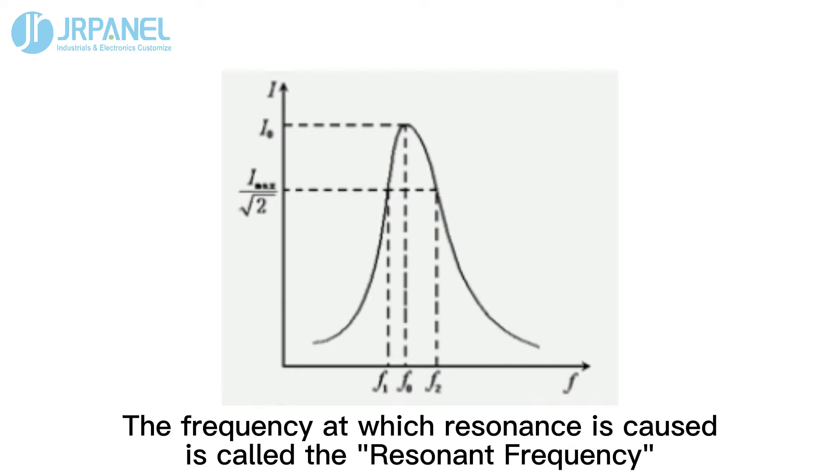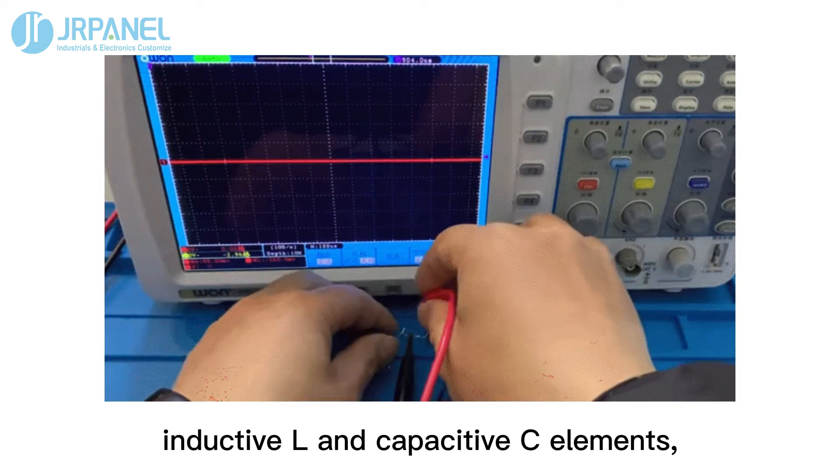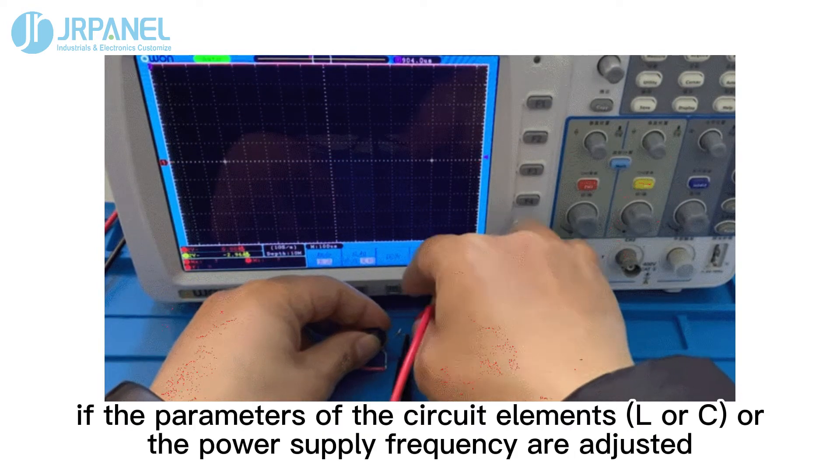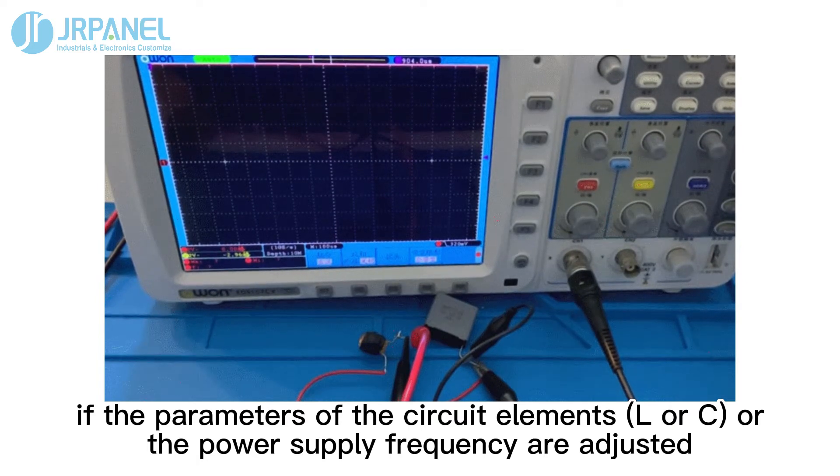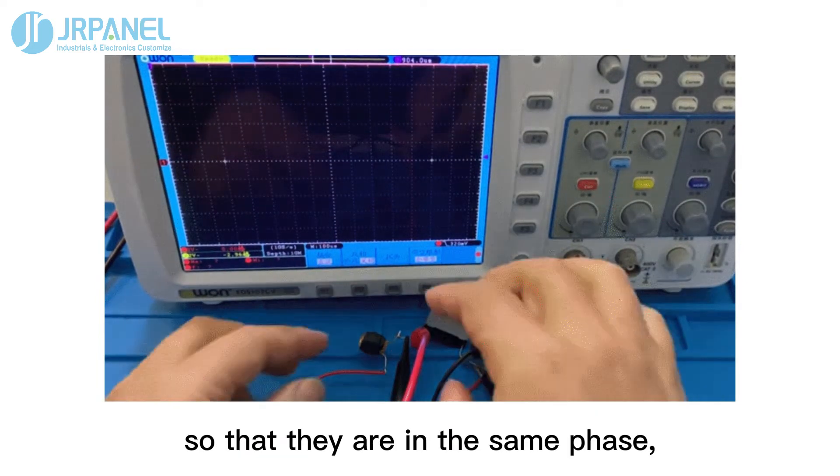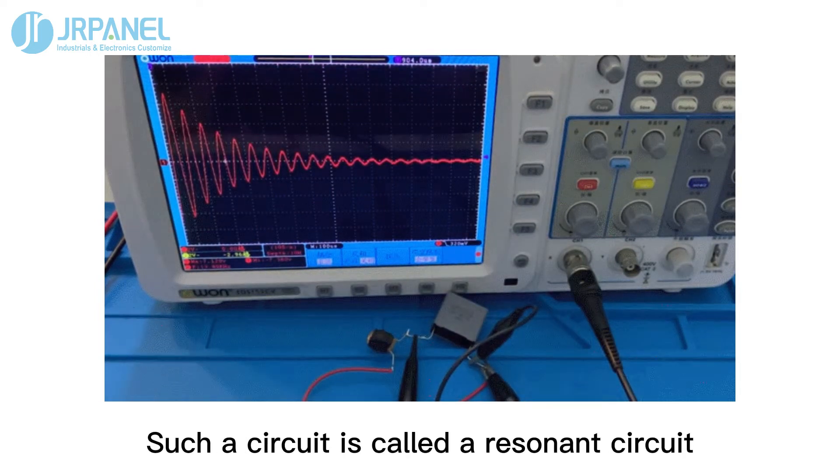The frequency at which resonance is caused is called the resonant frequency. In an AC circuit with resistive R, inductive L, and capacitive C elements, if the parameters of the circuit elements L or C or the power supply frequency are adjusted so that they are in the same phase, the whole circuit appears purely resistive. Such a circuit is called a resonant circuit.